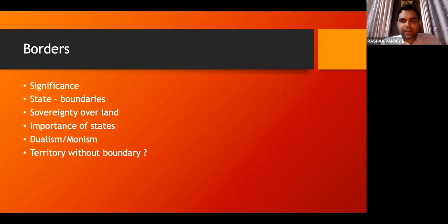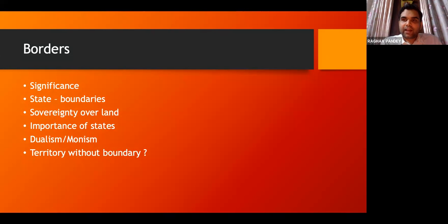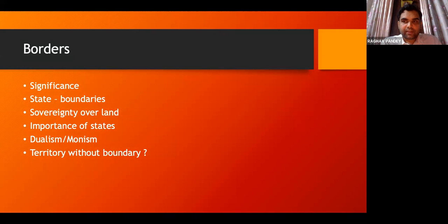In India, you cannot go to the High Courts or the Supreme Court to enforce rights under international law. You cannot file a writ under Article 226 to a High Court enforcing a right derived from an international convention. However, it is possible in other countries — say the United States of America. The US Constitution says that treaties which the US government has signed and ratified are part of the law of the land. So if you are a US citizen entitled to a right under an international convention, you can go to a US court and get those rights enforced.